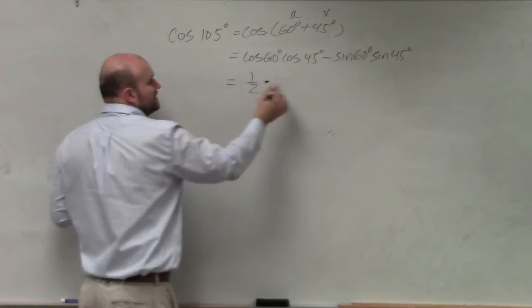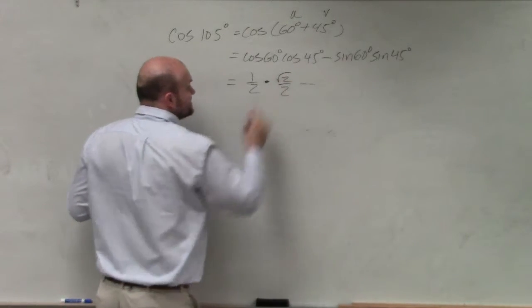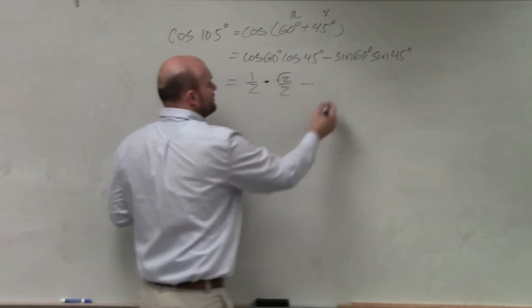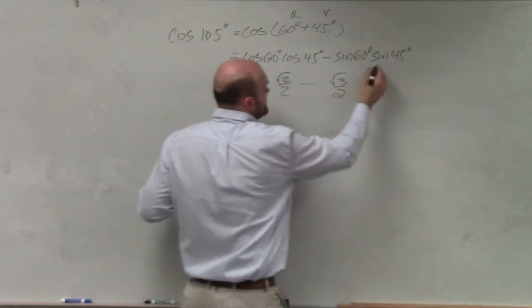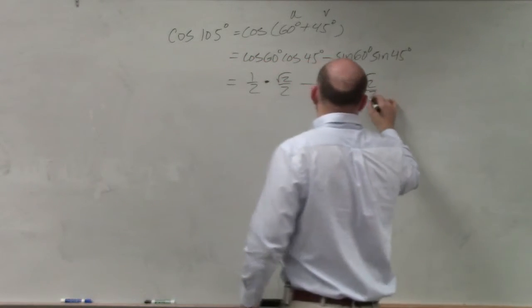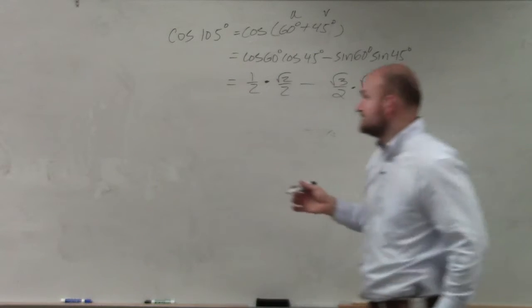Cosine of 45 degrees, that's going to be square root of 2 over 2. Minus the sine of 60 degrees is going to be square root of 3 over 2. Sine of 45 degrees is the square root of 2 over 2. So now we just multiply and simplify.